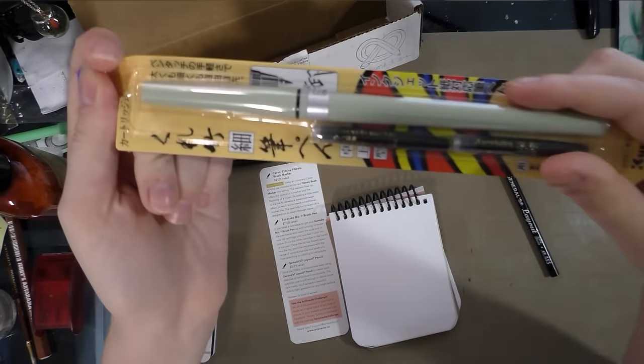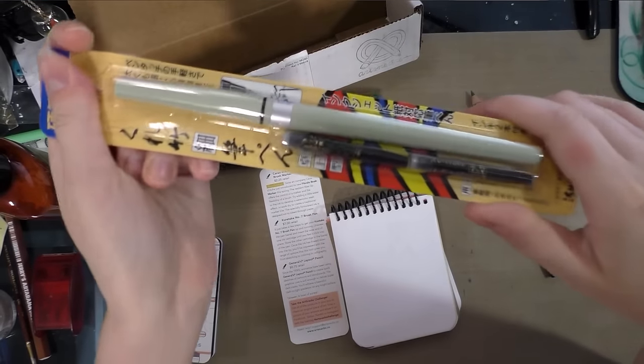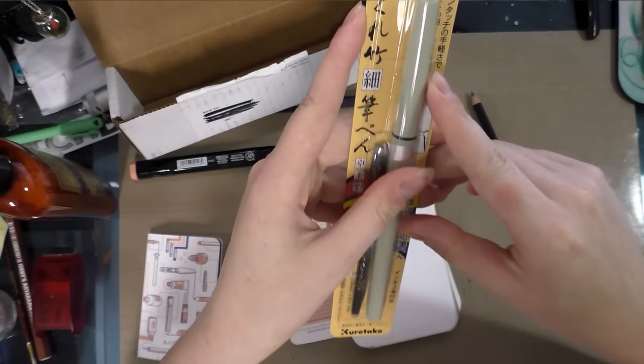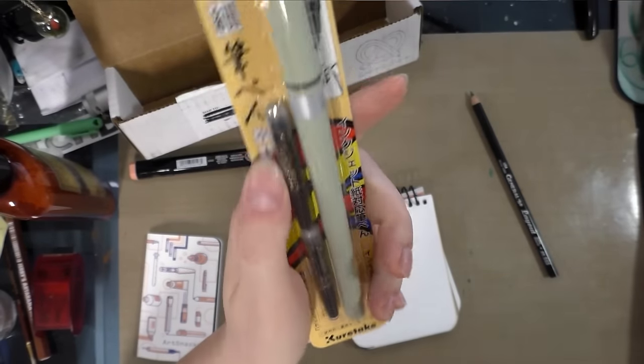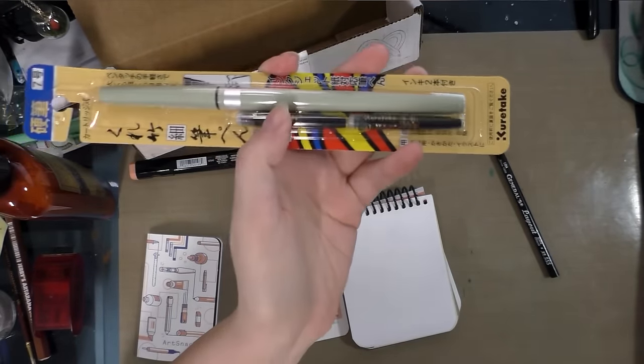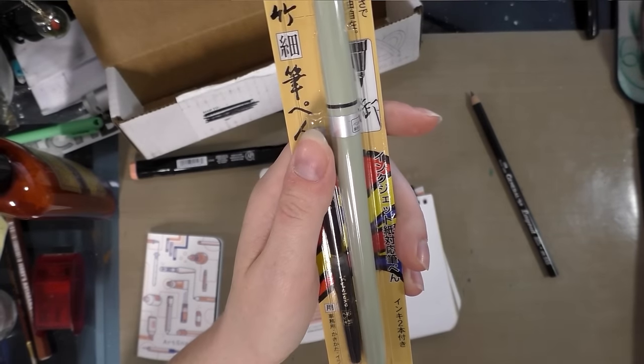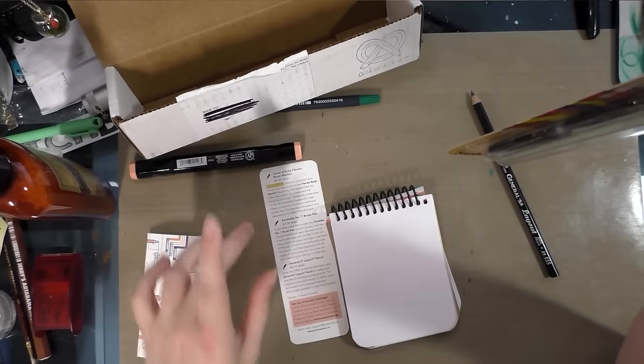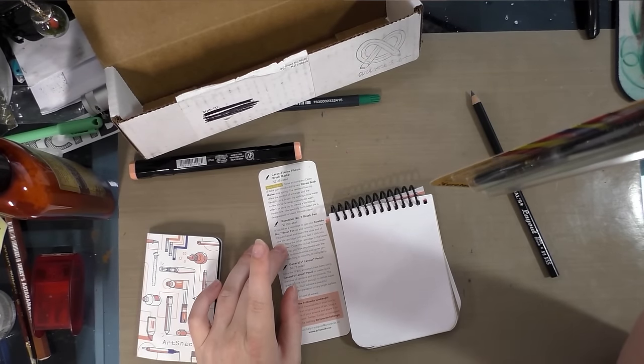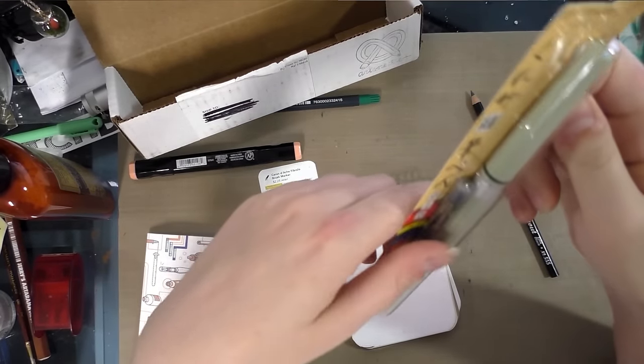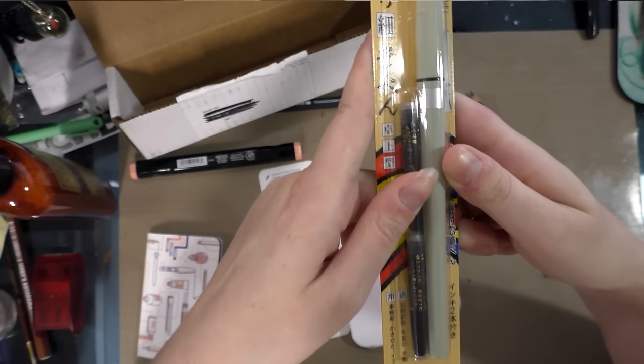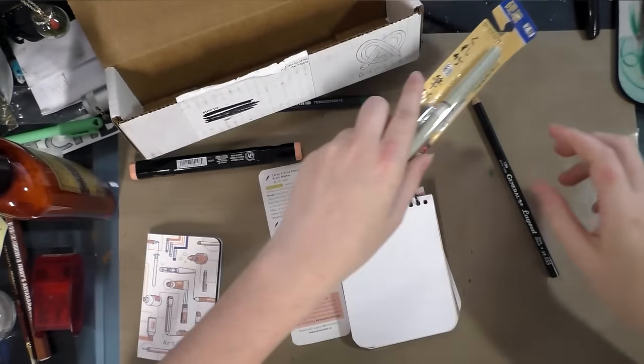Next up is the Kuretake No. 7 brush pen. I've never reviewed these before. And this has a felt tip and has refillable ink cartridges. The ArtSnacks card says it's $7 retail. I found it for $6.95 on Amazon and $7 on JetPens.